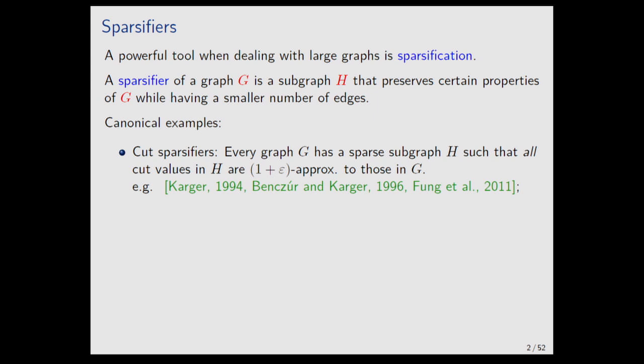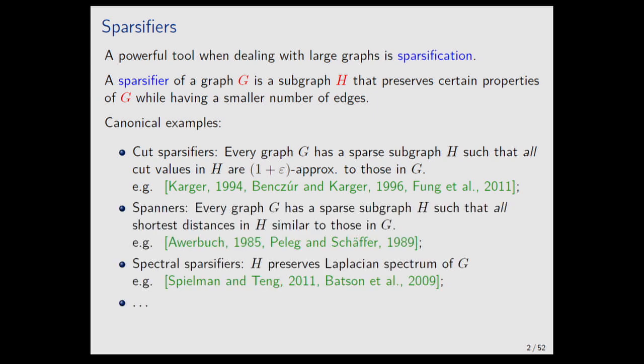Not for all problems do we have such nice sparsifiers. For shortest paths, the classic sparsifier is a spanner, which preserves all shortest paths but with worse approximation. There are also spectral sparsifiers. For each problem you need to develop your own sparsifier, and sometimes they'll be good and sometimes less good. The orienting question of this talk is: matching is another core graph problem, but what would a good sparsifier for matching look like? That's what I want to talk about.